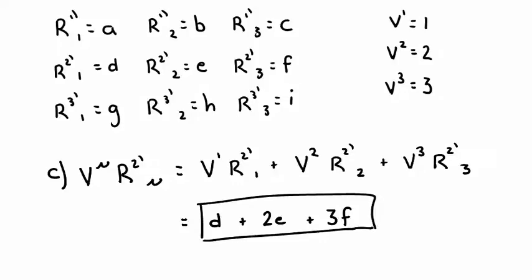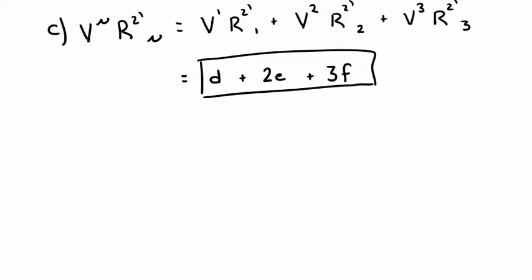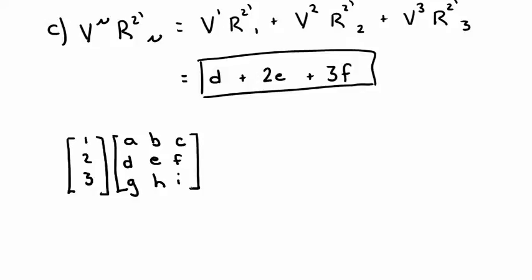This is one benefit of using index notation. If we were told to solve this using matrix multiplication, we wouldn't be able to do it. Multiplying a column vector by a matrix isn't possible under the rules of linear algebra. Using index notation, however, we find that order doesn't matter.